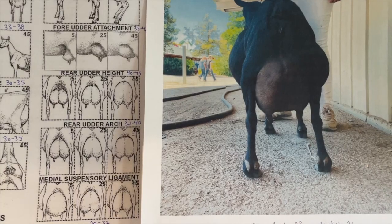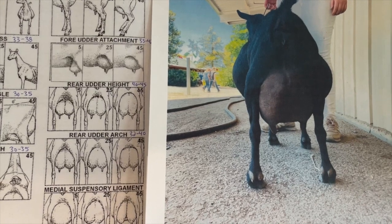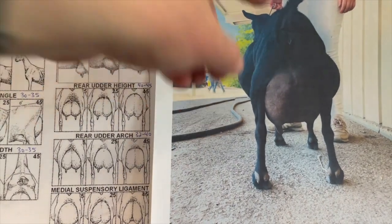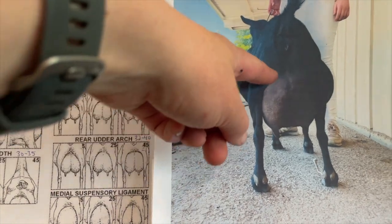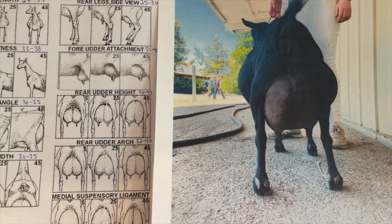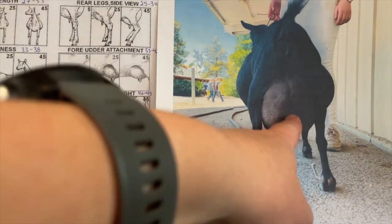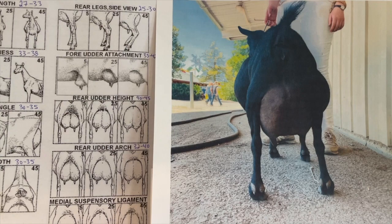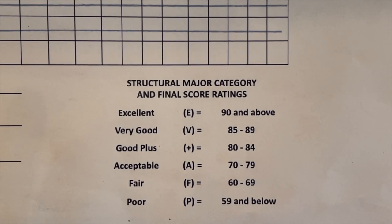Here's that same doe in rear view — she's black, so she doesn't photograph very well. She got a 33 in rear udder height, and you can see she has more fleshing between her vulva and the top of her udder. In arch she got a 28 — we're looking for 32 to 40 — it's pretty good but could be better. In medial suspensory ligament she got a 26 — we want 28 to 32 — I'd like to see more definition and a tighter ligament there, which would also improve teat placement.